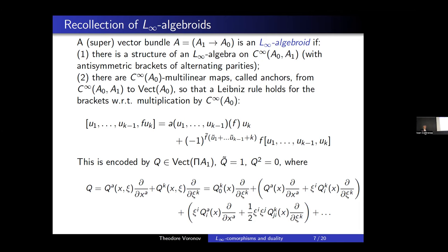All this structure can be encoded in a single homological vector field on the total space with reversed parity, odd and squaring to zero. If you expand this formal vector field with respect to the natural Z-degree given by the linear structure in the vector bundle, you have several pieces — there are low-order pieces and higher pieces. In one of the previous talks, the two lower pieces correspond to a differential or curvature. It is sometimes convenient to assume you have no low-order pieces, starting directly from the third term, which corresponds to just the algebra structure plus higher homotopy terms.